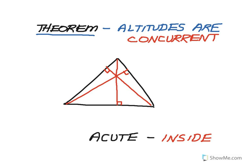The next theorem is about altitudes of a triangle. Remember, altitudes come out of the vertex of an angle and hit the opposite side at a perpendicular. It turns out that all three altitudes of a triangle are also concurrent, but where they intersect depends on the type of triangle. With an acute triangle, the point of intersection of the three altitudes is inside the triangle.